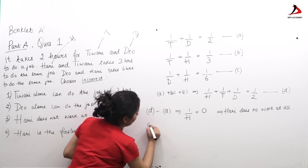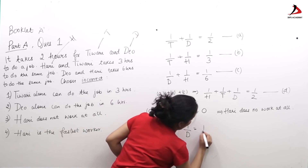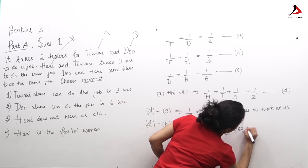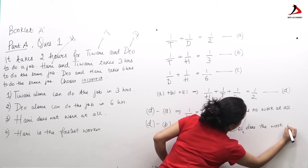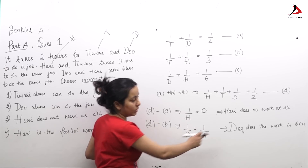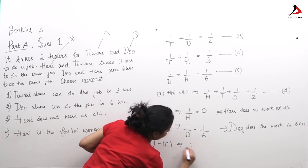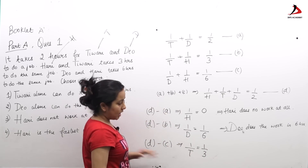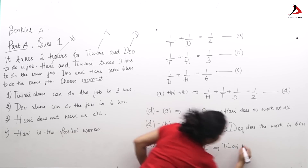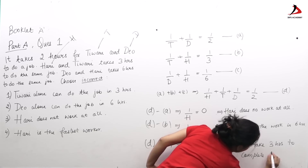Equation D minus equation B gives 1/D = 1/6, which means Dio does the work in 6 hours. Since 1/D denotes the work done by Dio in 1 hour, which is 1/6, Dio will take 6 hours to complete the whole work. Equation D minus equation C gives 1/T = 1/3, so Tiwari will take 3 hours to complete the work.